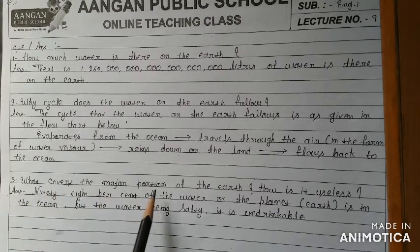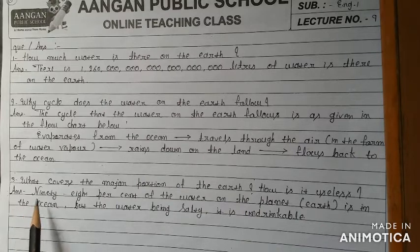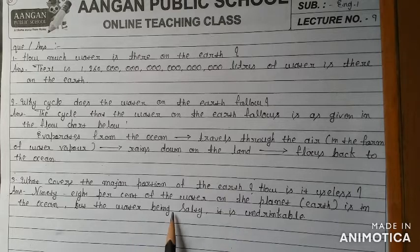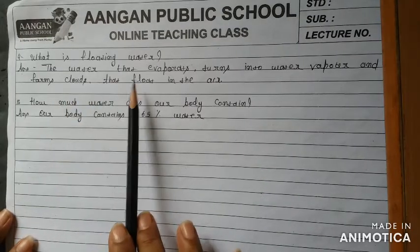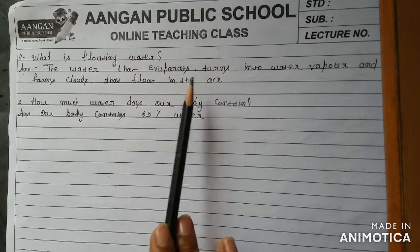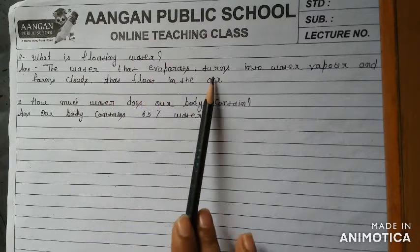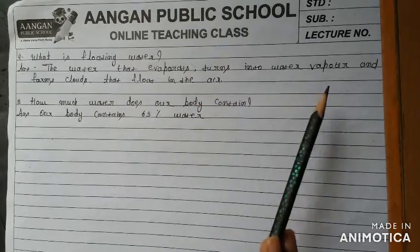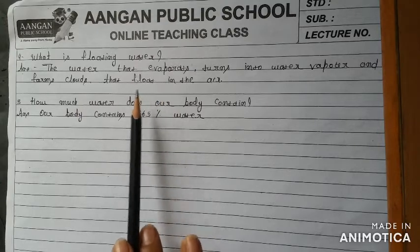Number 3: What covers the major portion of the earth and how is it useless? Answer: 98% of water on the planet is in the ocean, but since it is salty it is undrinkable. Number 4: What is floating water? Answer: The water that evaporates turns into water vapor and forms clouds that float in the air.